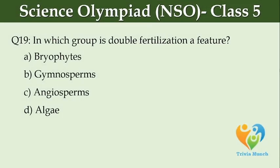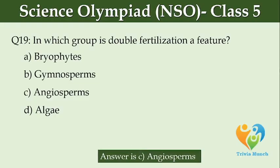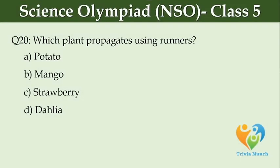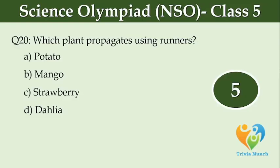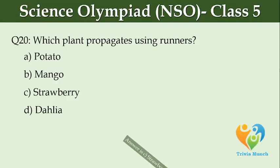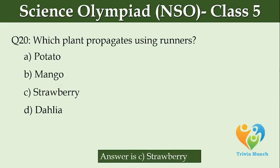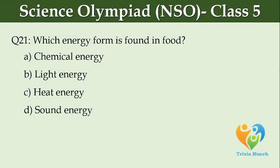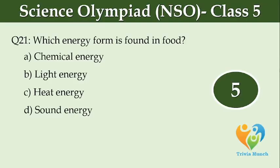In which group is double fertilization a feature? Option A, bryophytes. Option B, gymnosperms. Option C, angiosperms. Option D, algae. Which energy form is found in food? Option A, chemical energy. Option B, light energy. Option C, heat energy. Option D, sound energy.